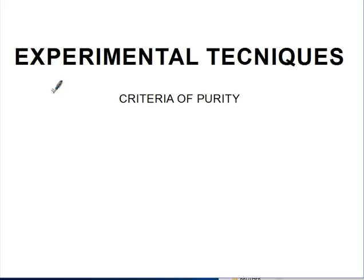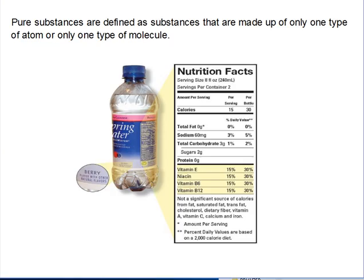Hello, welcome to cyberlearningzone.com. Today we're talking about experimental techniques: criteria of purity. In normal life when we say something is pure, we're normally talking about cleanliness. But in chemistry when we say something is pure, it has nothing to do with dirt or cleanliness — we're talking about a substance made up of only one type of atom or one type of molecule.